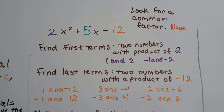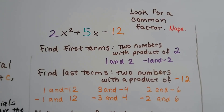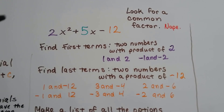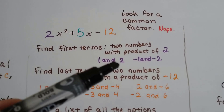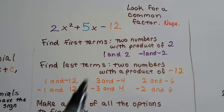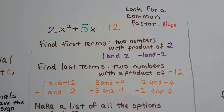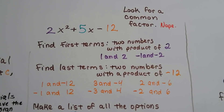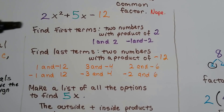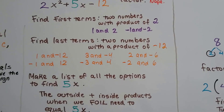Now let's look at the next example: 2x squared plus 5x minus 12. We check for a common factor — do 2, 5, and 12 share one? Nope, so we move on. We need two numbers with a product of 2: positive 1 and positive 2, or negative 1 and negative 2. For the last term, we need a product of negative 12: options include 1 and −12, −1 and 12, 3 and −4, −3 and 4, 2 and −6, and −2 and 6.